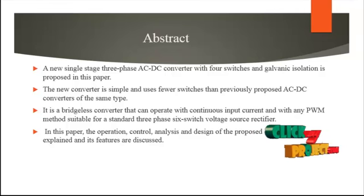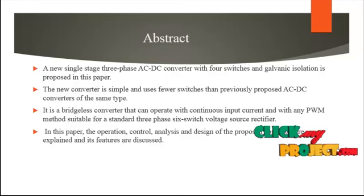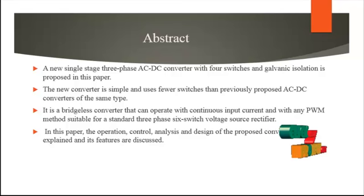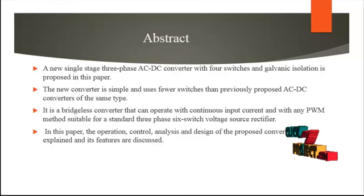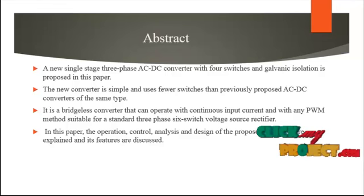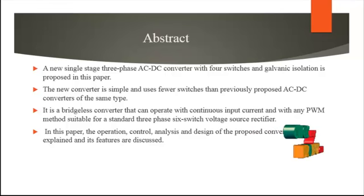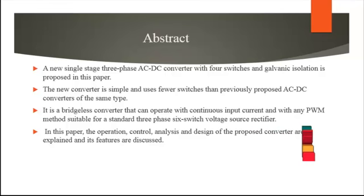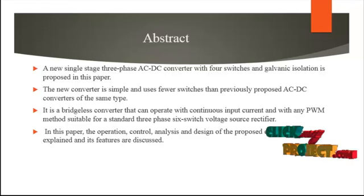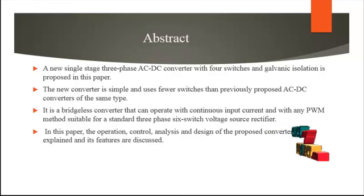One advantage is continuous input current — any PWM method will be suited for this process, as in a standard 3-phase 6-switch voltage source converter. The entire system is developed using PSIM software version 6.0. The operation is controlled by a PI controller, and some reference voltage is given under a transformation — ABC to DQ or ABC to alpha-beta — which is applied to the control circuits of the entire system.